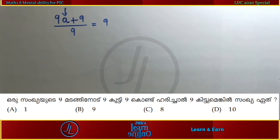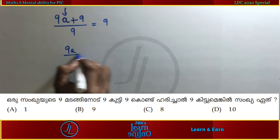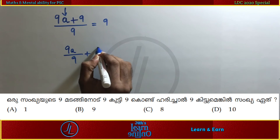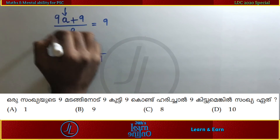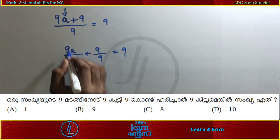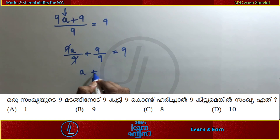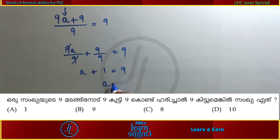Let's solve this problem. We have 9^a divided by 9, plus 9 divided by 9. So 9^a divided by 9 equals the unit. A plus 9 divided by 9 is equal to 9, so a equals 3. The answer is Option C.